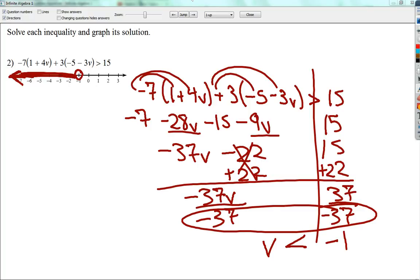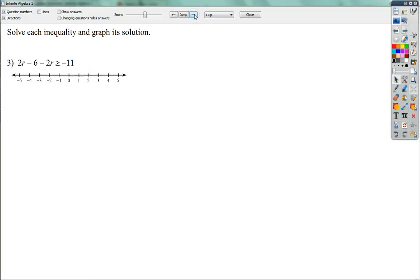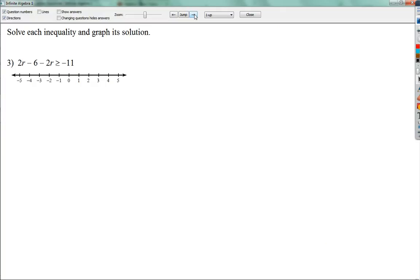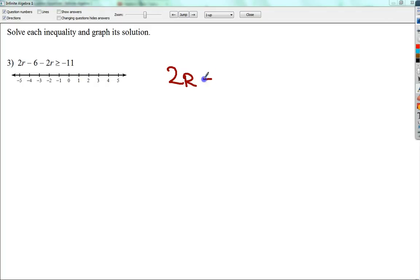I think I have one more of this type. And that's it. I mean, it's really not. It's just a lot of the same stuff you've probably been doing forever. This one's a pretty good one to end on. 2r minus 6 minus 2r is greater than or equal to negative 11.